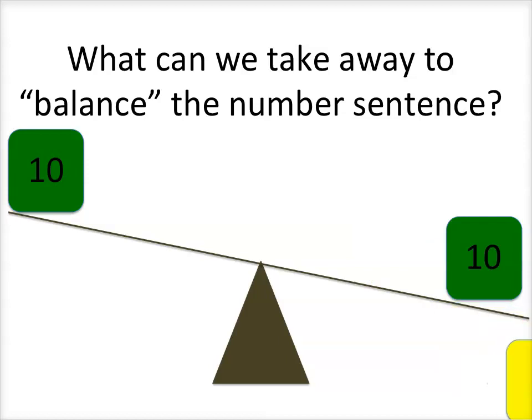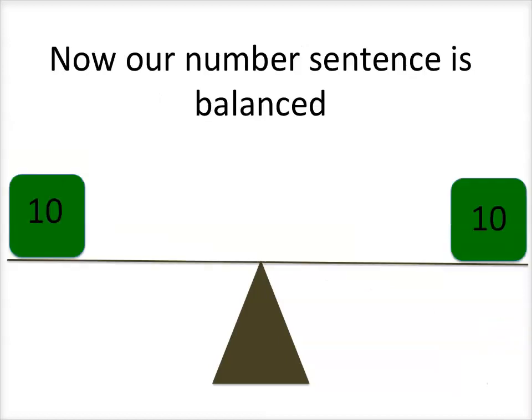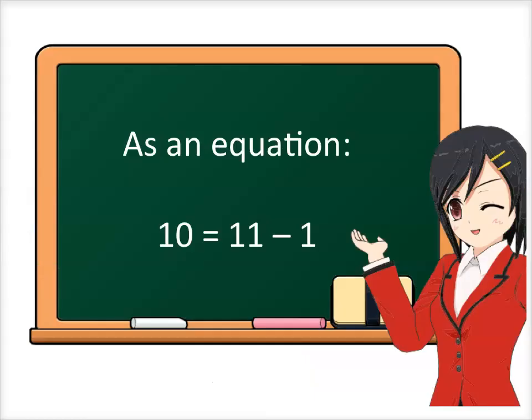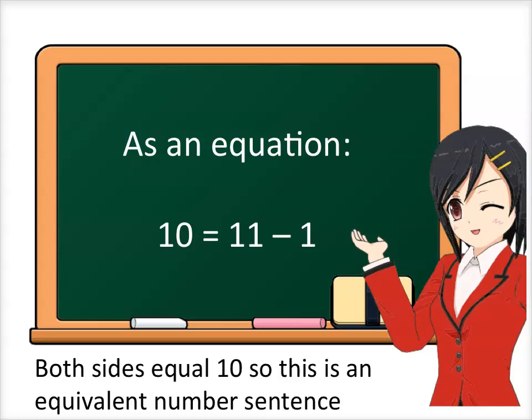See ya! Now the equation is balanced. We can write this as a number sentence: ten equals eleven minus one, because both sides of the equation are now equal to ten.